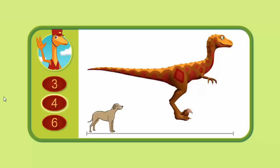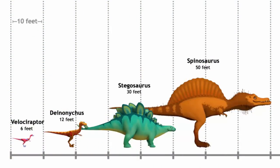Let's measure this Deinonychus to see if you're right. One, two, three, four. This Deinonychus is four dogs long. Great job! That's exactly what you guessed. Here are the animals you measured. They're all different sizes.